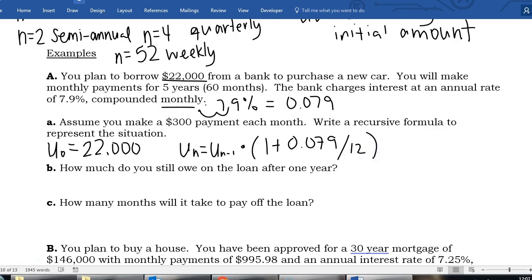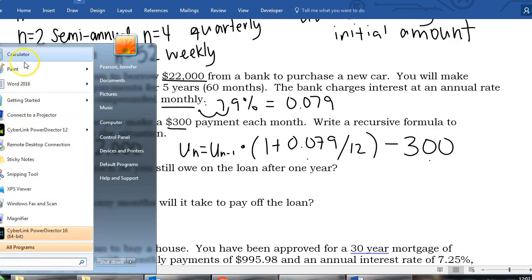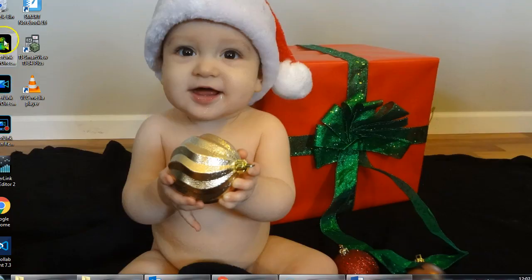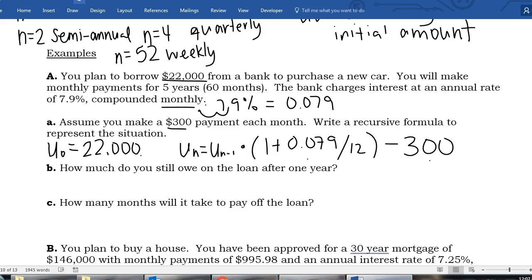And finally I'm making a $300 payment so I'm going to be subtracting my payment amount. So if I borrow $22,000 to start, I'm getting charged interest on that but then I'm making $300 payments on that. How much do you still owe after one year? So I'm going to have to open up my calculator for this one.